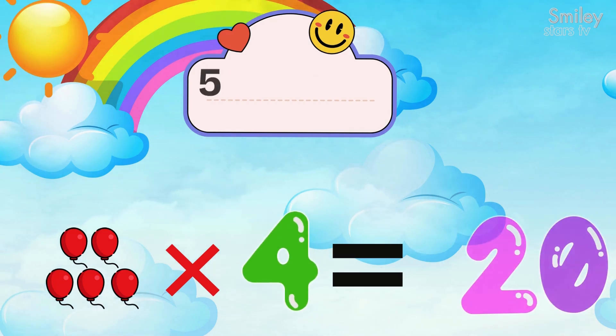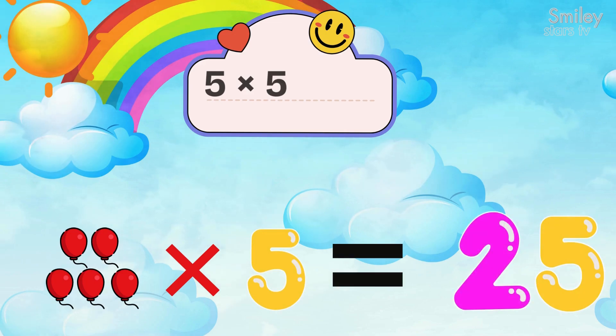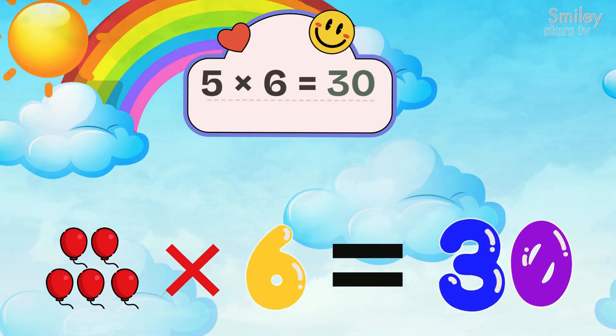The end. Five fours are twenty. Five fives, twenty-five. Five sixes are thirty. We're learning high five.